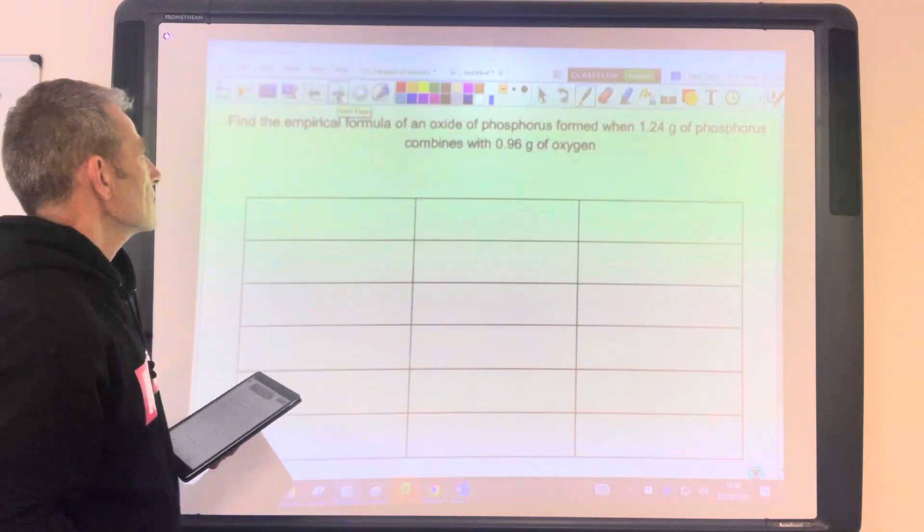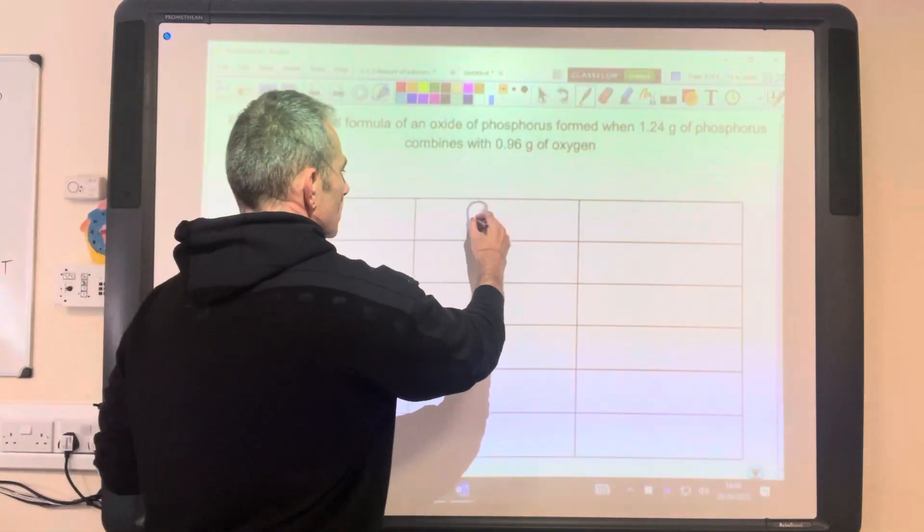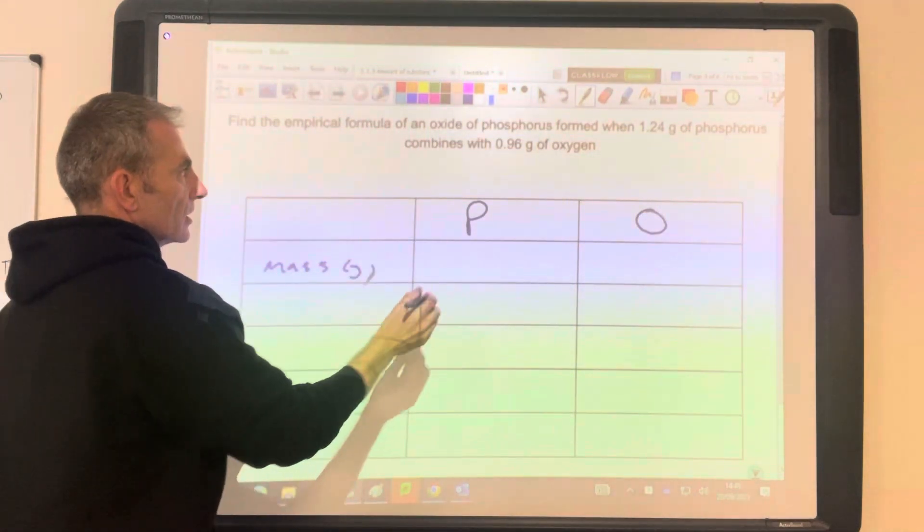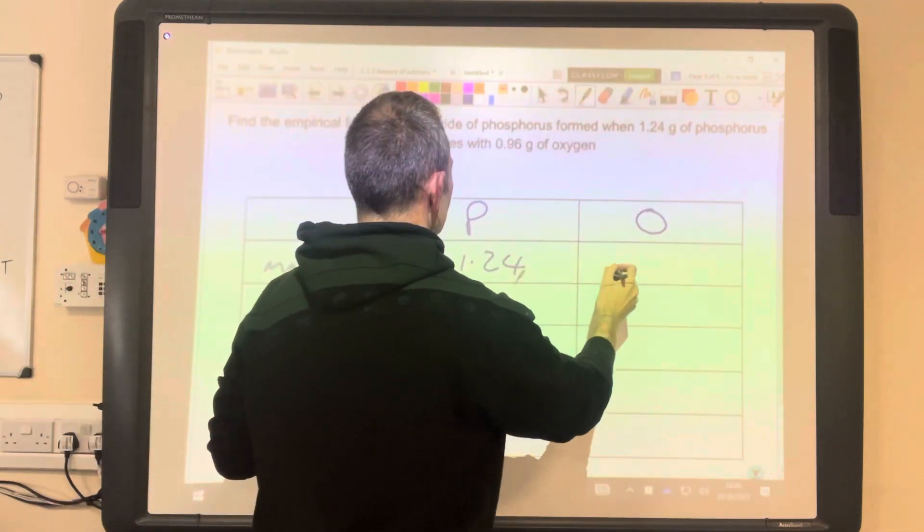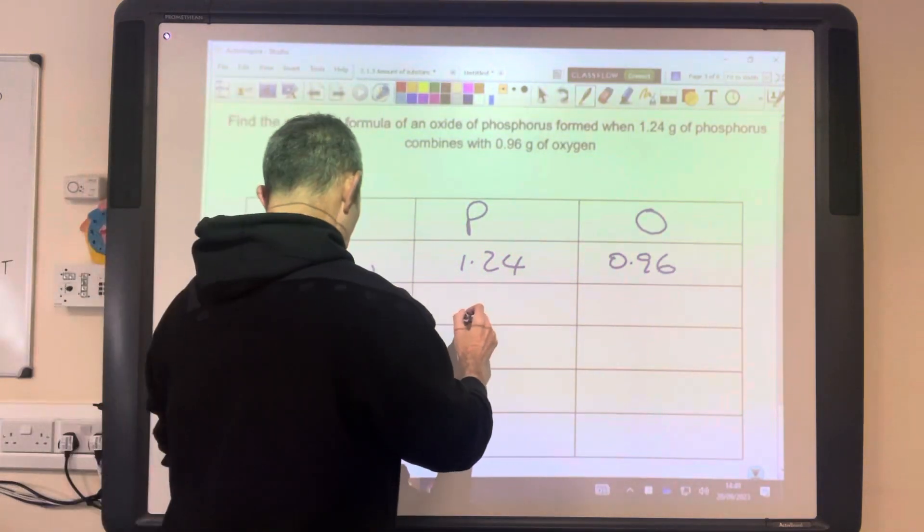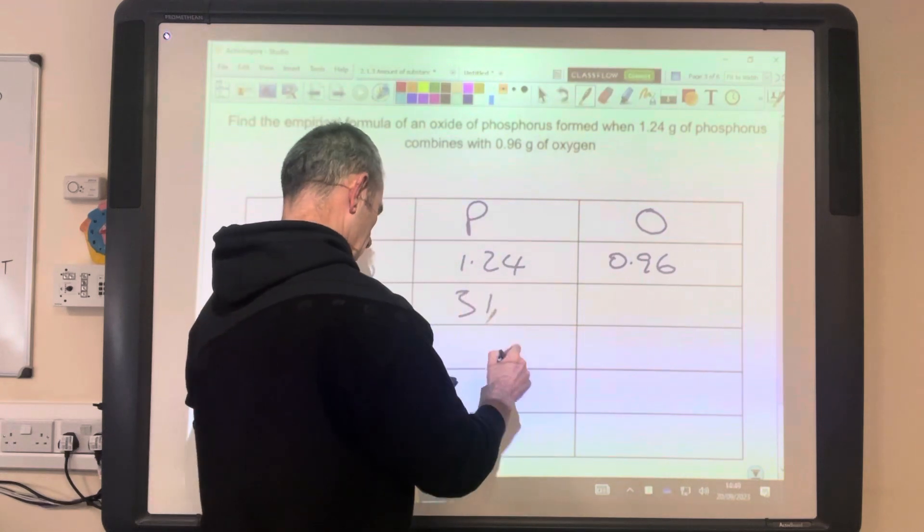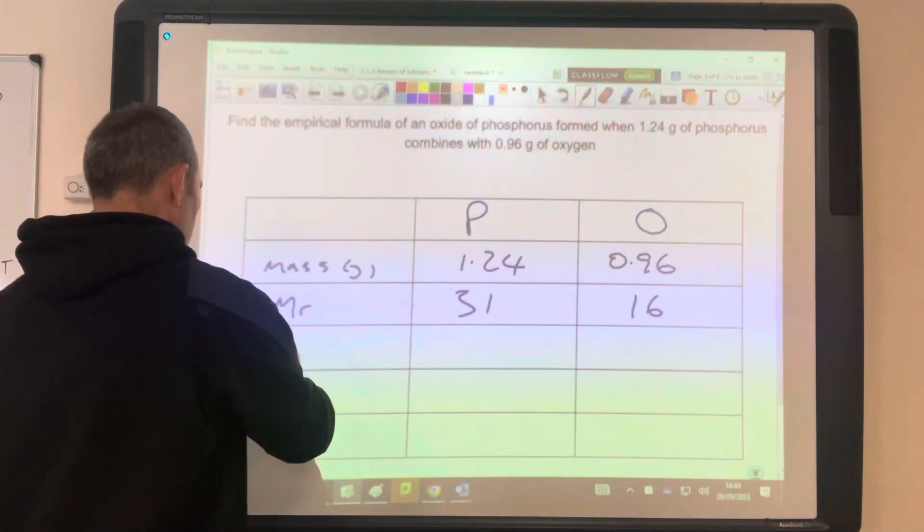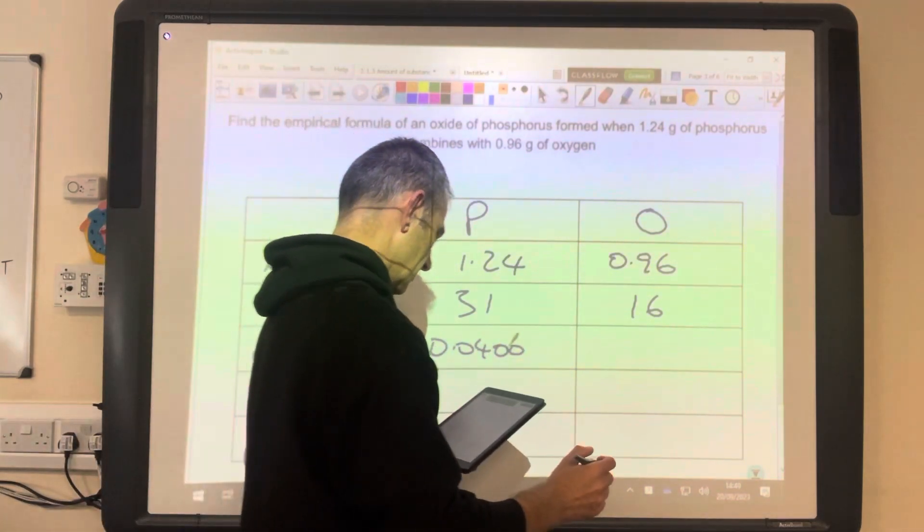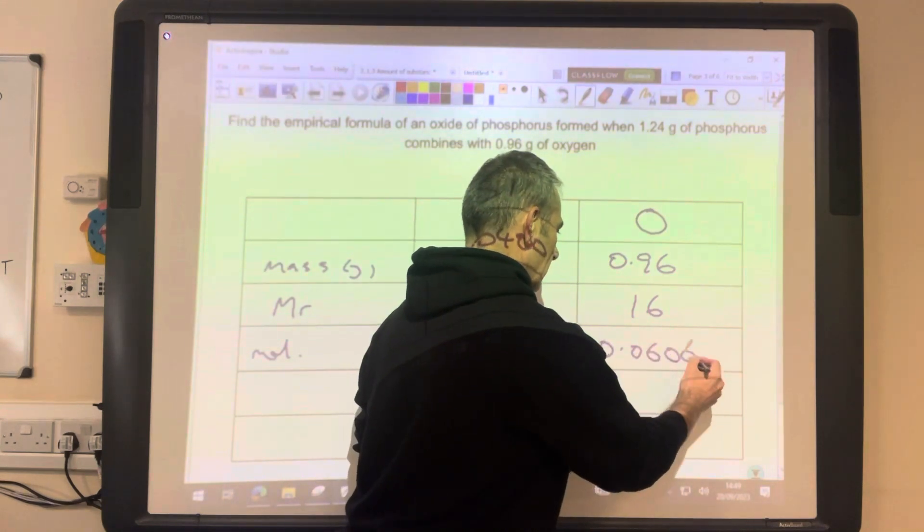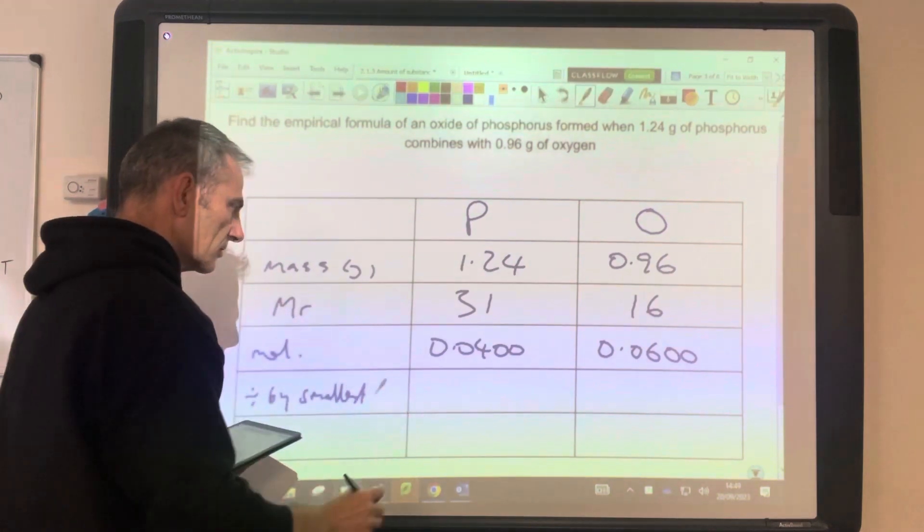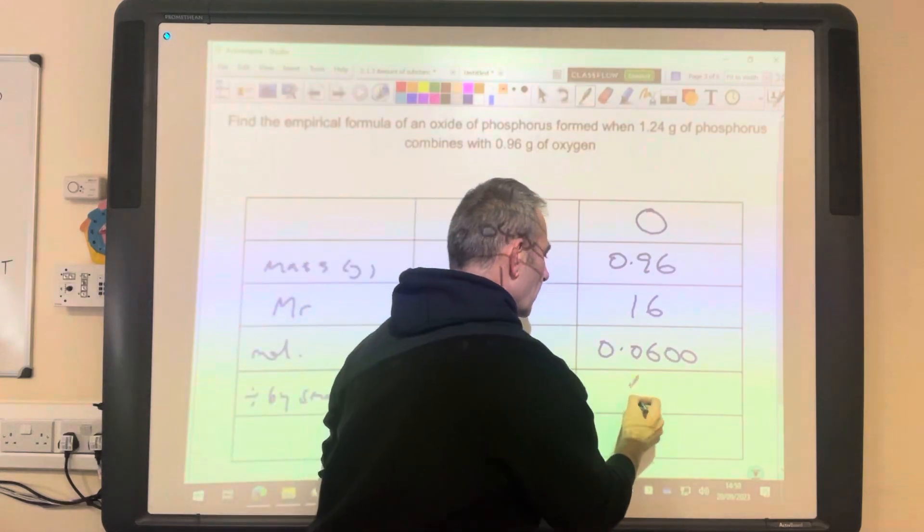Next one. So it's another oxide, this time it's of phosphorus and oxygen. So again, we put the mass in grams. So we've got 1.24 grams of phosphorus, 0.96 grams of oxygen. So MR is 31, 16 moles, and 3 significant figures, 0.04 and 0.06. Divide by the smallest to get the ratio. So obviously that's going to be your 1, and that comes out at 1.5.